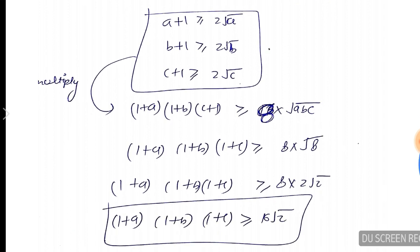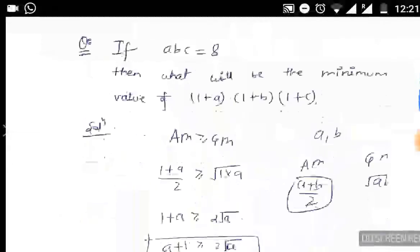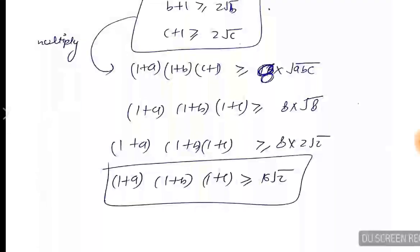In place of ABC, what will you put? 8. Look, it is given ABC is equal to 8. So you will put √8. The value of √8 is 2√2. Clear?